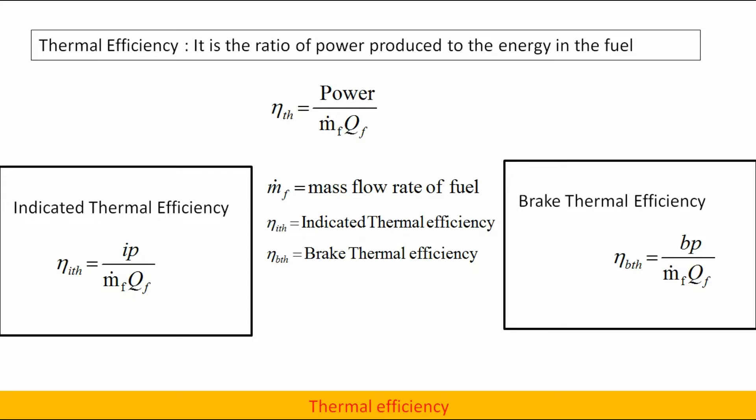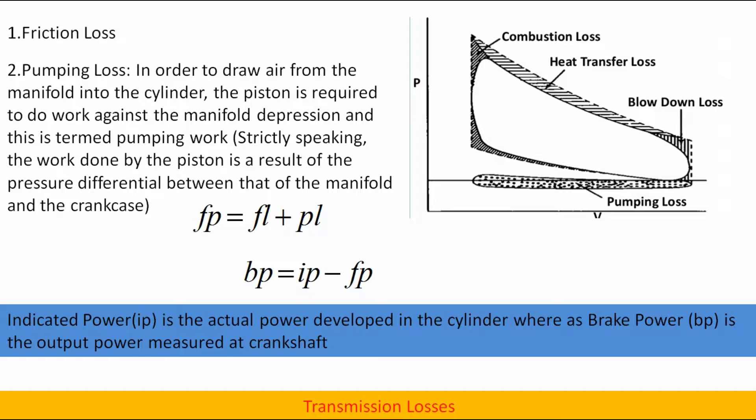Friction losses and pumping losses come under transmission loss. Friction loss is power loss due to friction between components. Pumping loss: in order to draw air from the manifold into the cylinder, the piston is required to do work against the manifold depression, and this is termed pumping work. Strictly speaking, the work done by the piston is a result of the pressure differential between the manifold and the crankcase.